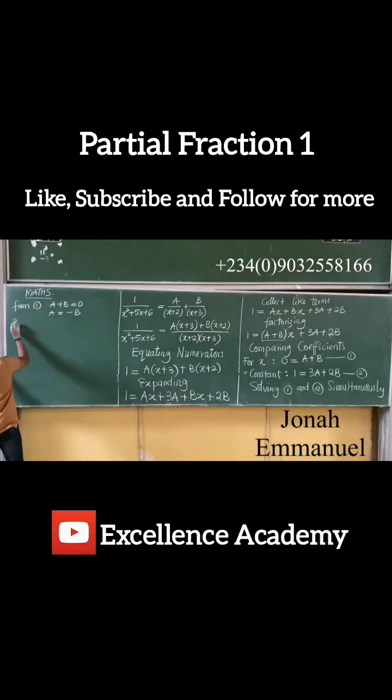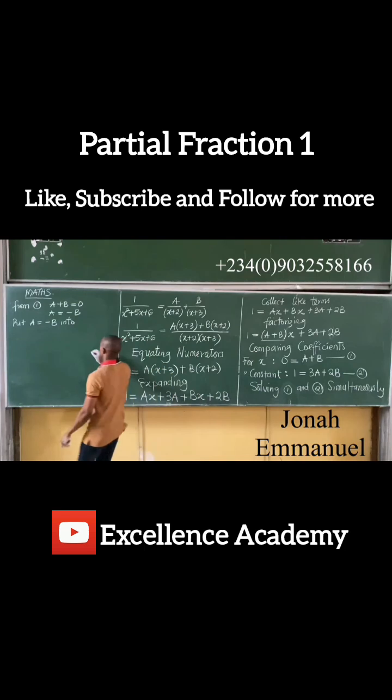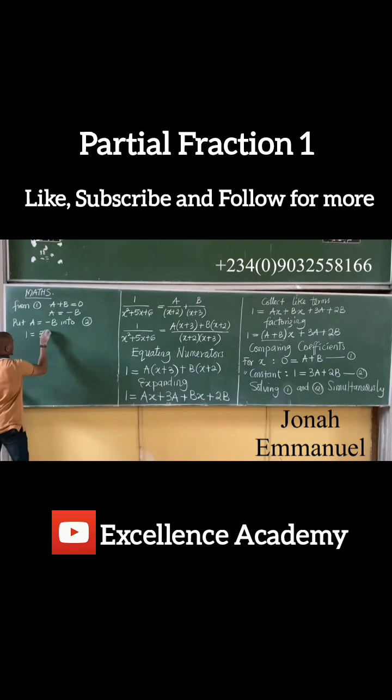I'll put A as equal to minus B into the other equation, that's equation 2. That is 1 equals 3A plus 2B. Substituting A here, I'll have 1 equals 3 into A, where A is minus B, then plus 2B.